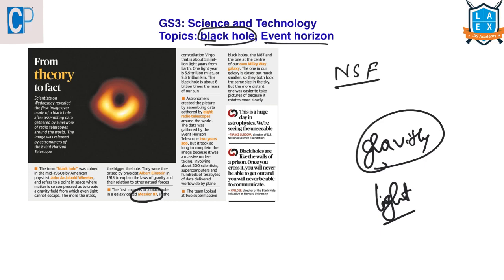The next concept is the event horizon. There is a boundary at the edge of a black hole called the event horizon — it is the point of no return. Any light or matter that crosses this boundary will be sucked back into the black hole. Simply put, the event horizon is the imaginary boundary surrounding the black hole from beyond which light cannot escape.